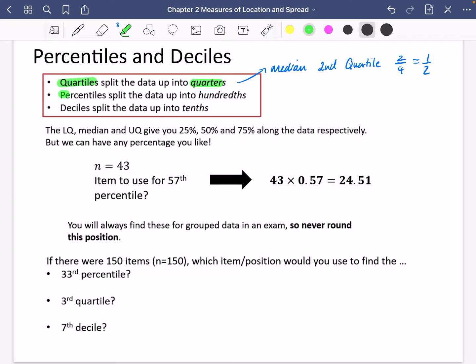Let's talk about the next bit. Percentiles are going to split the data up into hundreds, just as you'd guess. Deciles split the data up into tenths. I think of 'dec' from decimal, which makes me think of things being split up into 10.